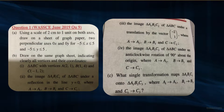Draw the image of triangle A1B1C1 of triangle ABC under a reflection in the line y equals zero, where A maps onto A1, B maps onto B1, and C maps onto C1. Also draw the image triangle A2B2C2 of triangle ABC under a translation by the vector (-2, 1), where A maps onto A2, B maps onto B2, and C maps onto C2.